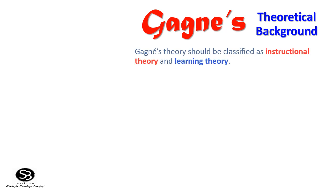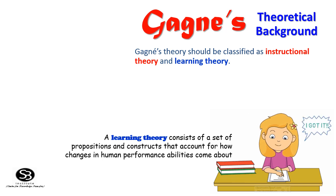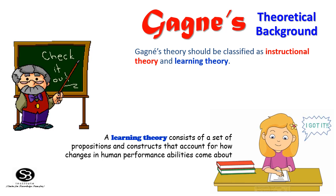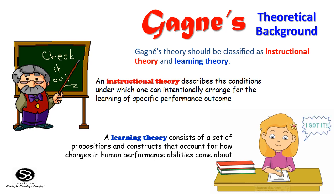Gagné's theory should be classified into two parts: instructional theory and learning theory. The learning theory consists of a set of propositions and constraints that account for how changes in human performance abilities come about. An instructional theory describes the conditions under which one can intentionally arrange for the learning of specific performance outcomes.